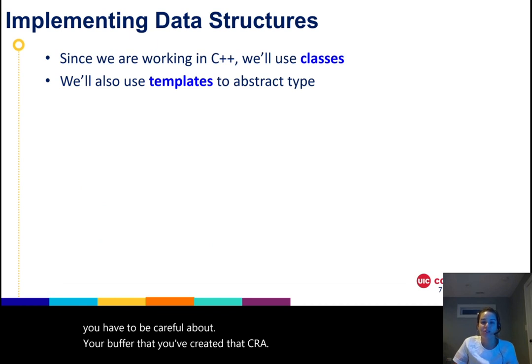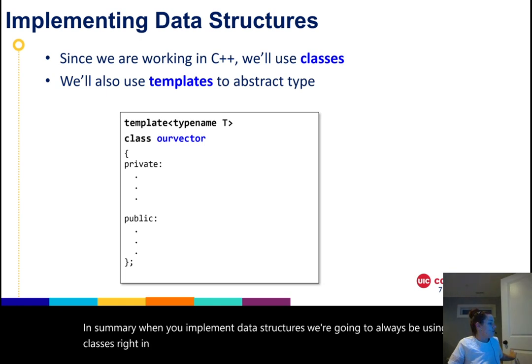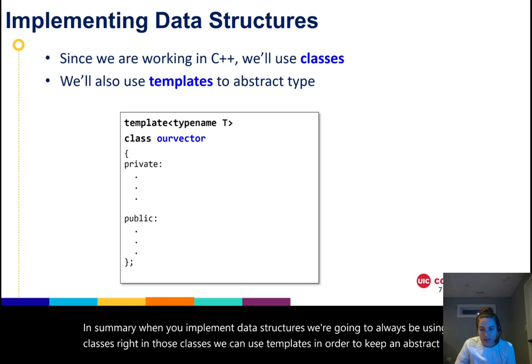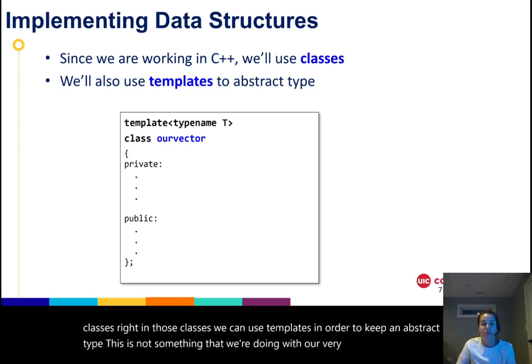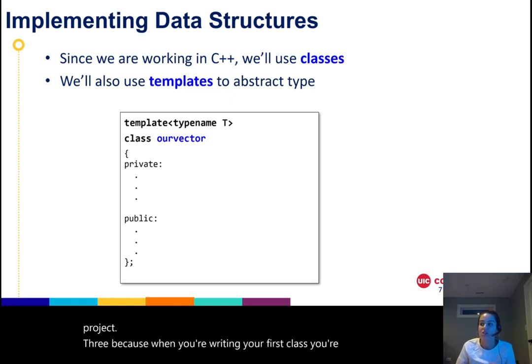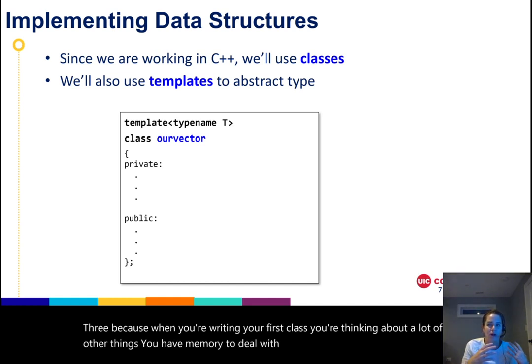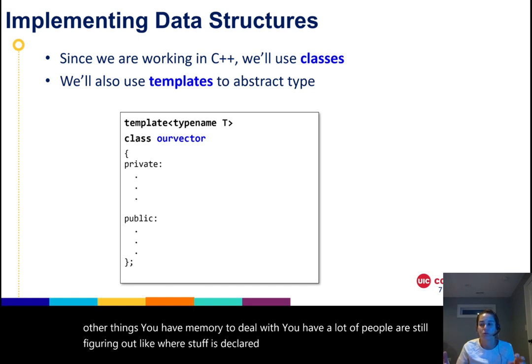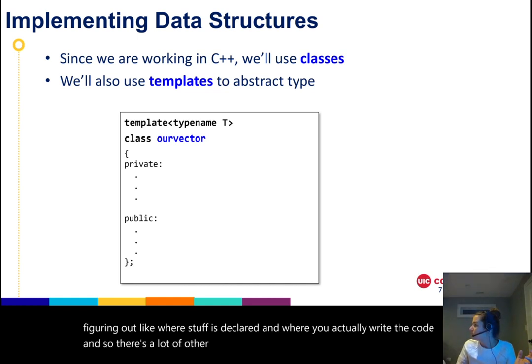So in summary, when you implement data structures, we're going to always be using classes. And in those classes, we can use templates in order to keep an abstract type. This is not something that we're doing with our very first class in project three because when you're writing your first class, you're thinking about a lot of other things. You have memory to deal with. You have a lot of people are still figuring out like where stuff is declared and where you actually write the code. And so there's a lot of other things to worry about.